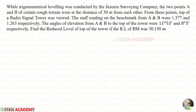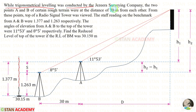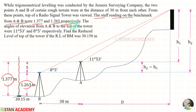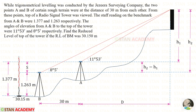Now let us do a problem. While trigonometrical leveling was conducted by the Jazira surveying company, two points A and B on a certain rough terrain were at a distance of 30 meters from each other. From these points, the top of a radio signal tower was viewed. Staff readings on the benchmark from A and B were 1.377 and 1.263 respectively. The angles of elevation from A and B to the top of the tower were 11° 53' and 8° 05' respectively. Find the reduced level of the top of the tower if the RL of the benchmark was 30.15 meters.